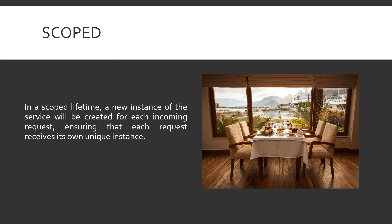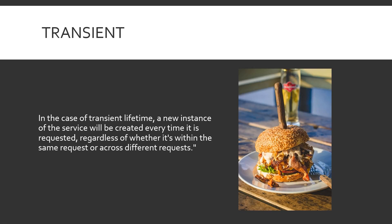Next, we will see what transient is. In the case of transient lifetime, a new instance of a service will be created every time it is requested, regardless of whether it is in the same request or across different requests. For example, you go to a restaurant, reserve a table, and order a burger. The same burger will not be served to many people — each time a new burger is prepared. Even if you're at the same table and want ten burgers, ten different instances will be created. Even within the same request, a new instance is created each time with transient.